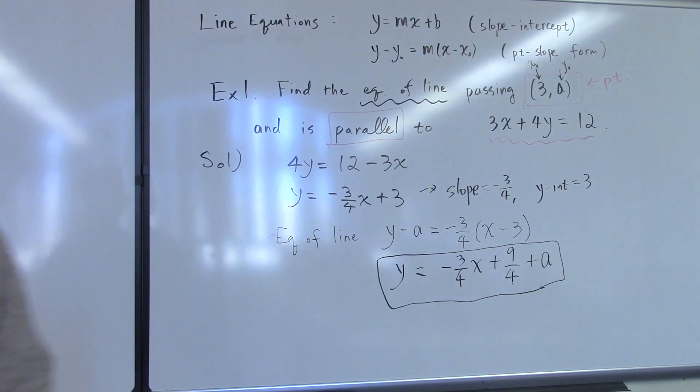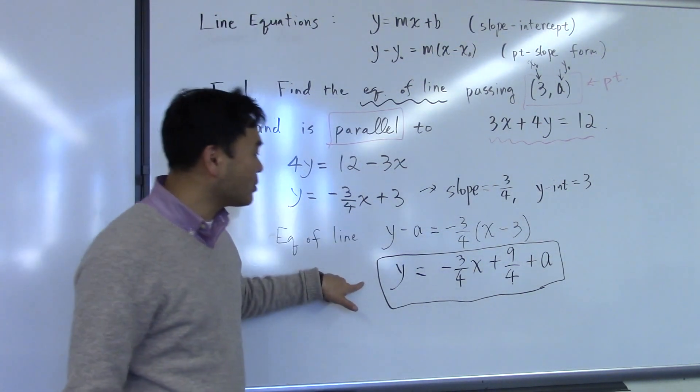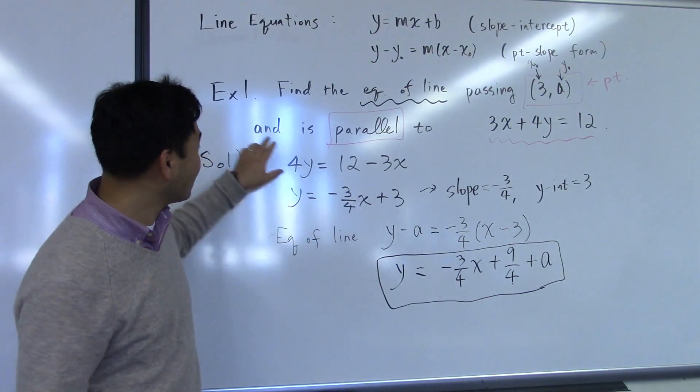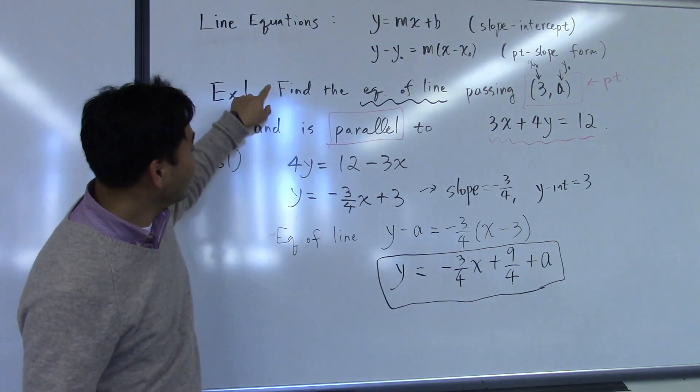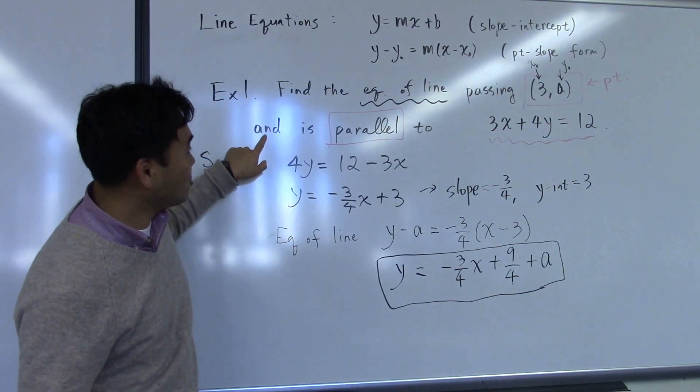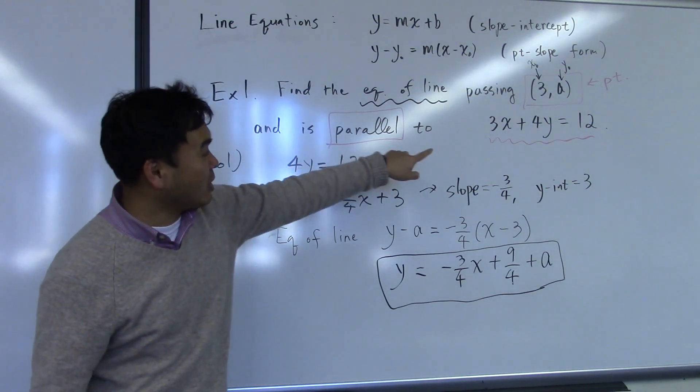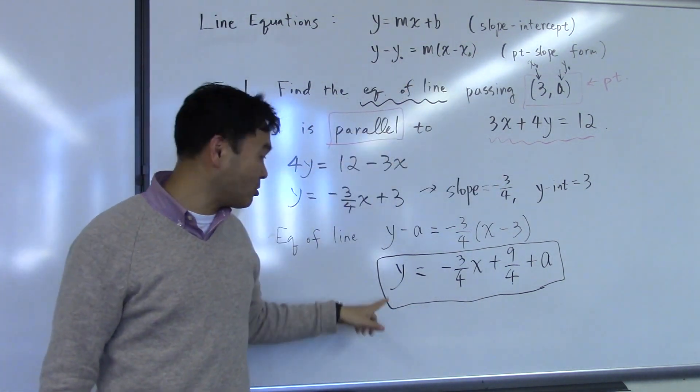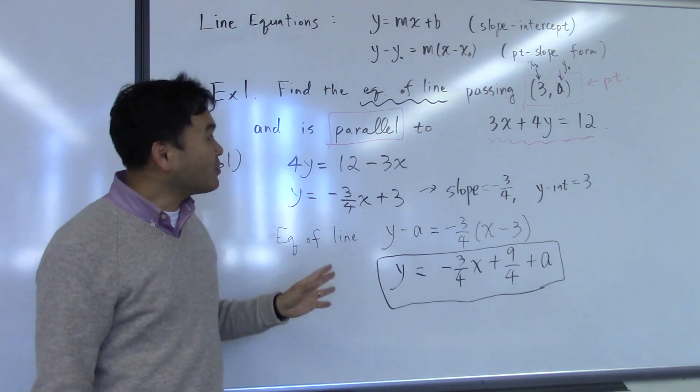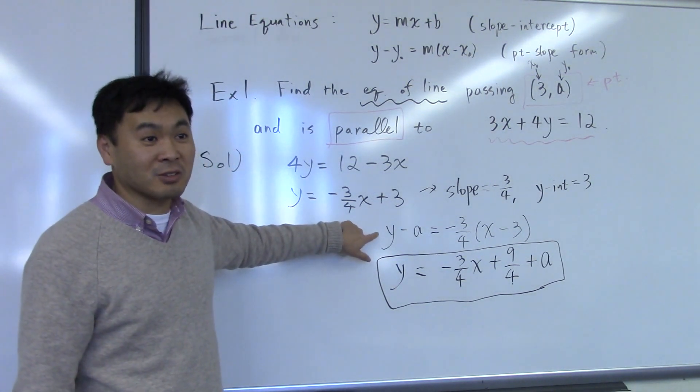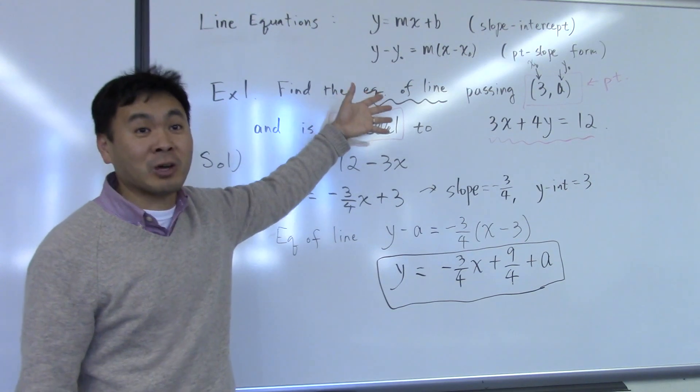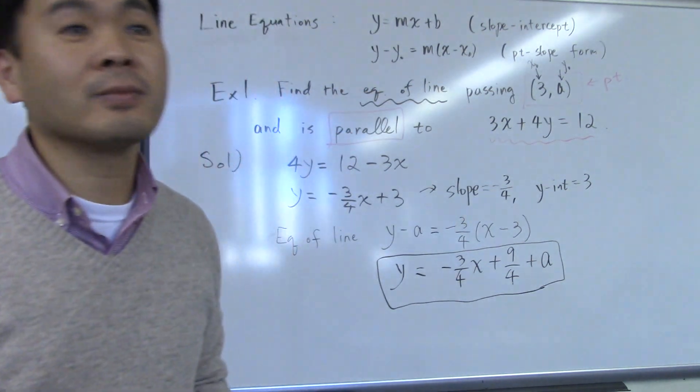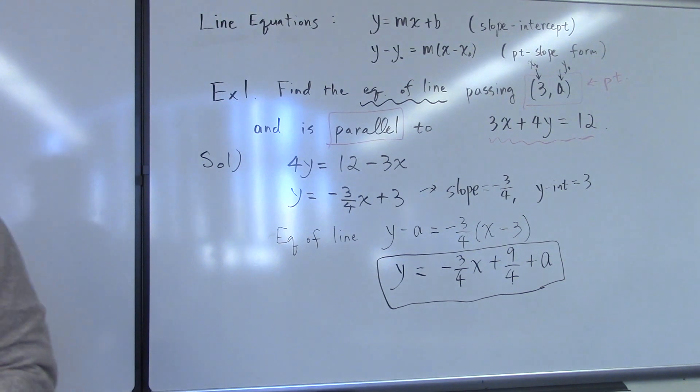Why have you changed it to the slope-intercept form? I was thinking about this hypothetical case where, in the question, it says find the equation of the line passing through 3 comma a and is parallel to 3x plus 4y equals 12 in slope-intercept form. If that's the question, you would solve for y. If not, it's okay to put it in this form because it didn't really specify what form of line equation they want.